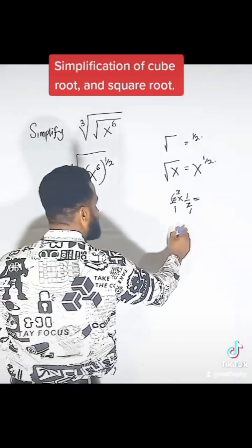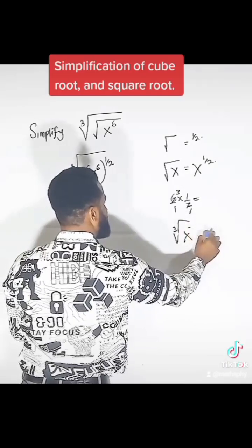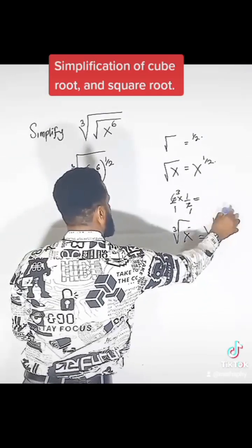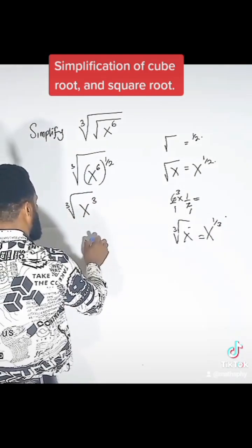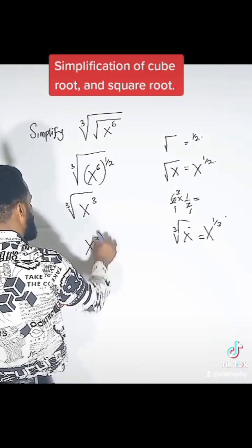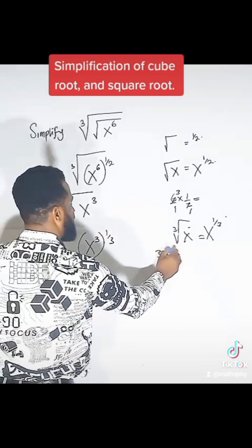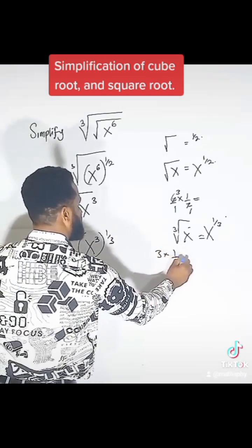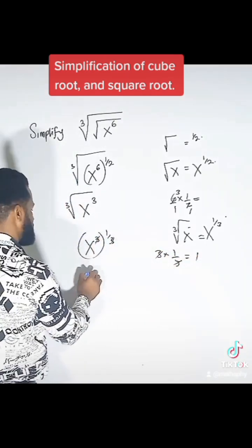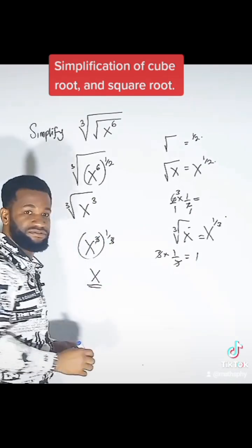Remember when you have a cube root of x, the answer is going to be x raised to the power 1 over 3. So this is going to be x raised to the power 3, then raised to the power 1 over 3. And 3 times 1 over 3 equals 1, so the 3s cancel. We have x. That is the solution.